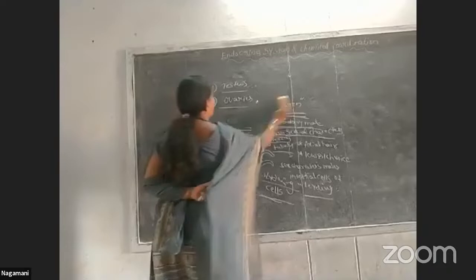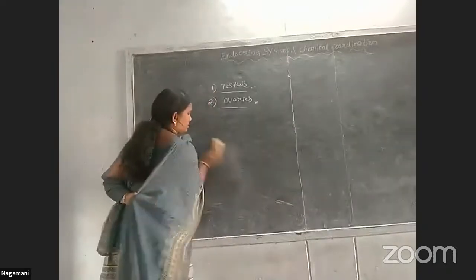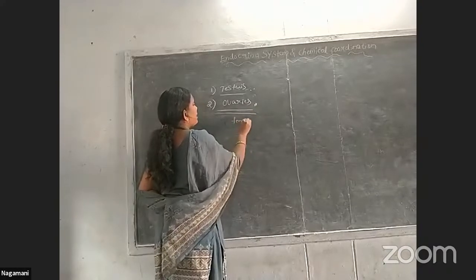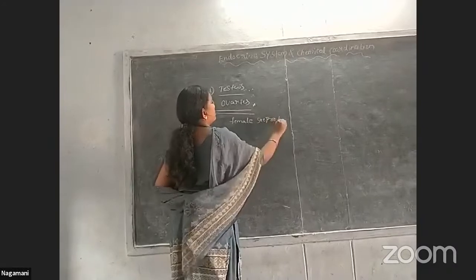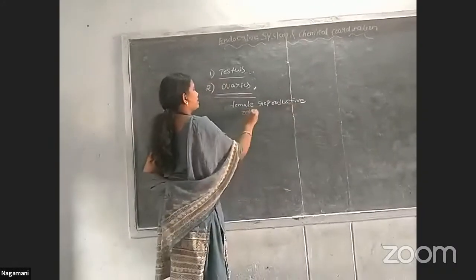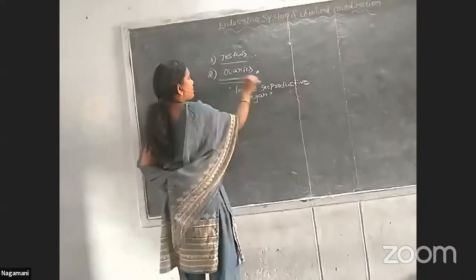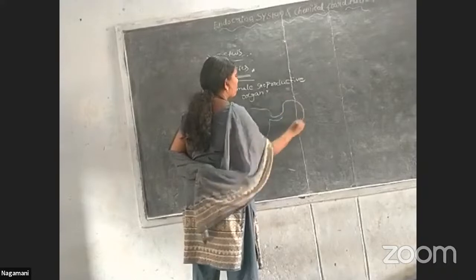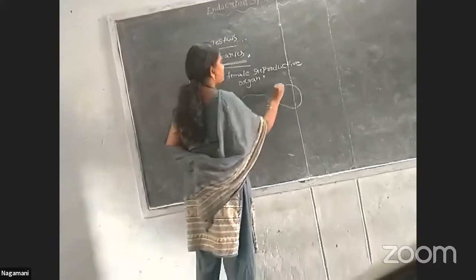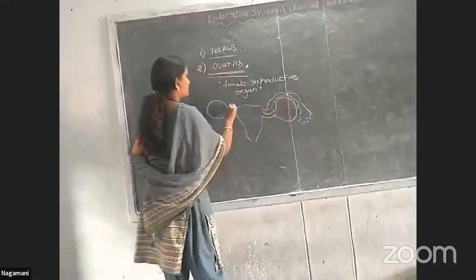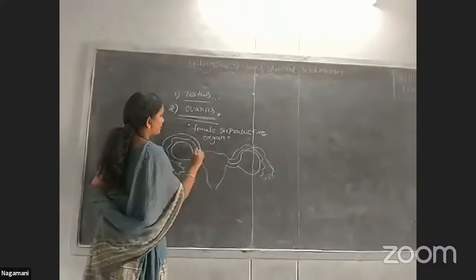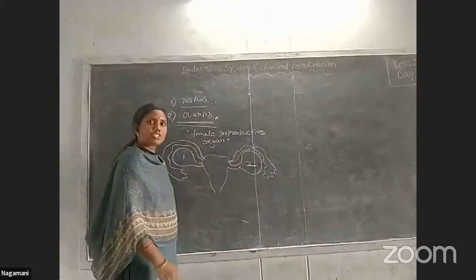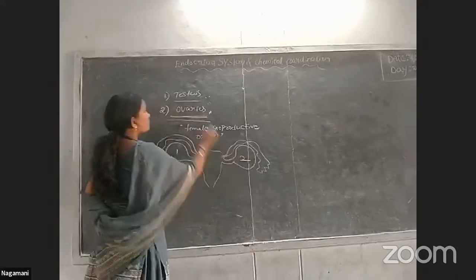Next, we will enter into the ovaries. Ovaries are the major female reproductive organs. In the female reproductive system, we observe one pair of ovaries — two ovaries, one on each side — in the abdominal region.